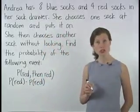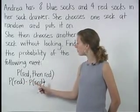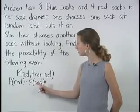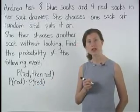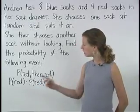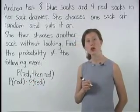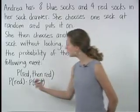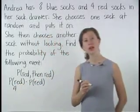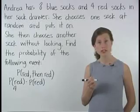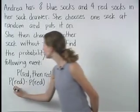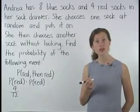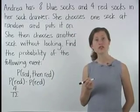It's important to note that these two probabilities will not be equal, since one sock will have been taken already before the second probability. To find the probability that Andrea first chooses a red sock, remember that there are four red socks in the drawer, so the number of favorable outcomes is four. And there are a total of twelve socks in the drawer, so there are twelve total outcomes. So the probability that Andrea first chooses a red sock is four out of twelve, or four-twelfths.